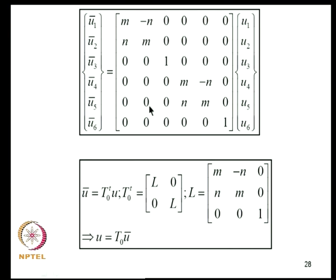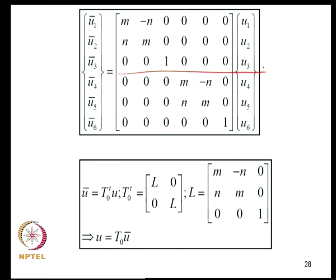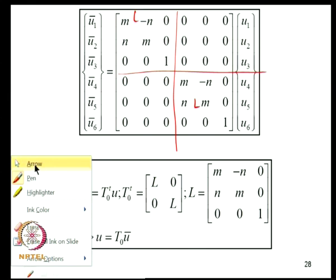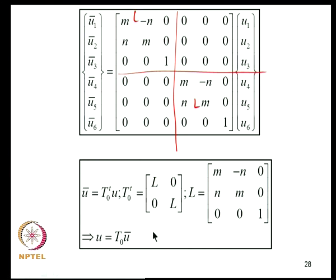In compact notation: U_bar = T0^T * U (local from global) and U = T0 * U_bar (global to local). This transformation is a 6×6 matrix where the block structure repeats the 2×2 rotation matrix L for translational DOF and identity for rotational DOF, with 3×3 zero off-diagonal blocks. We will use this transformation in our energy expressions.